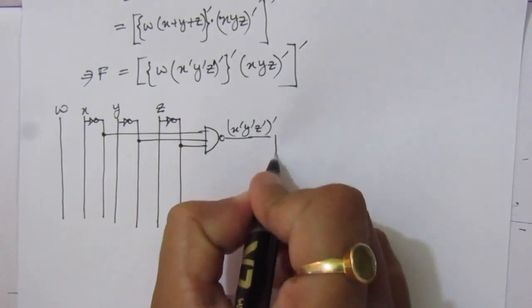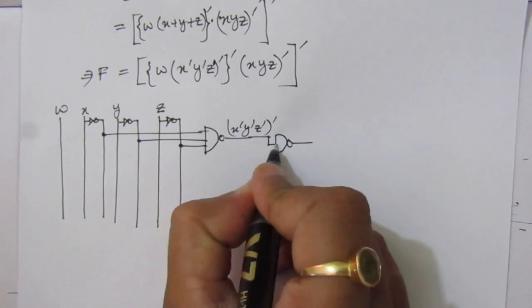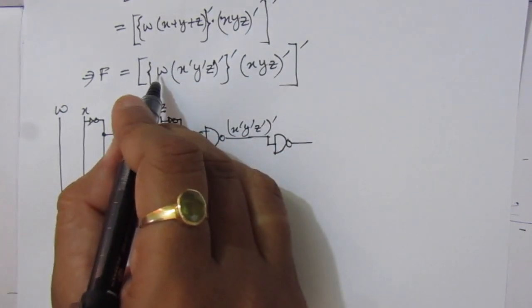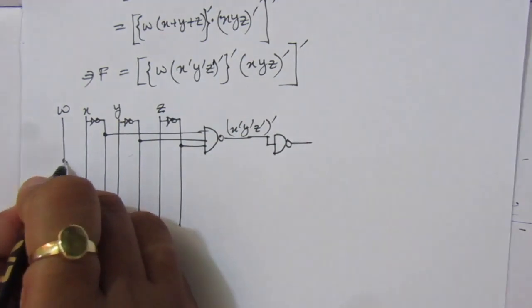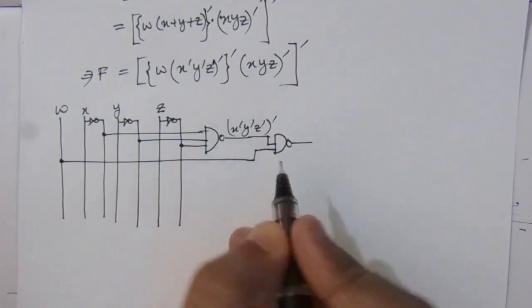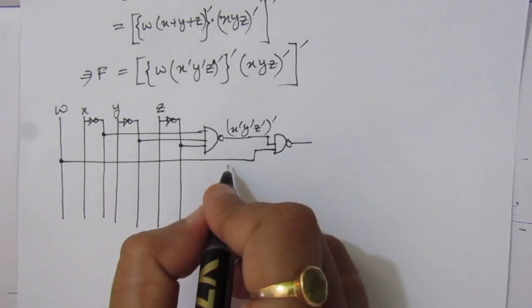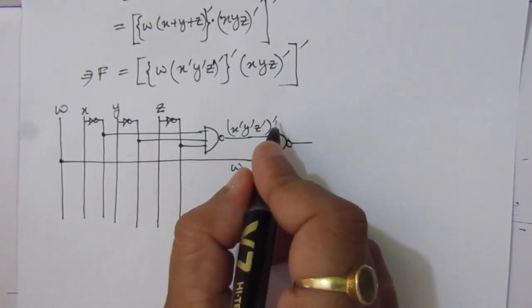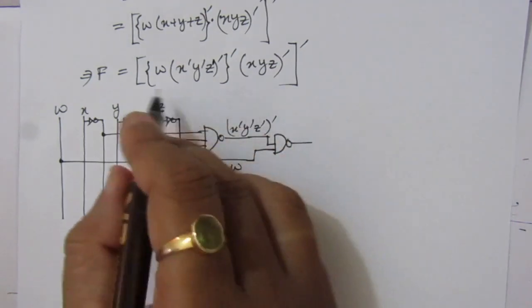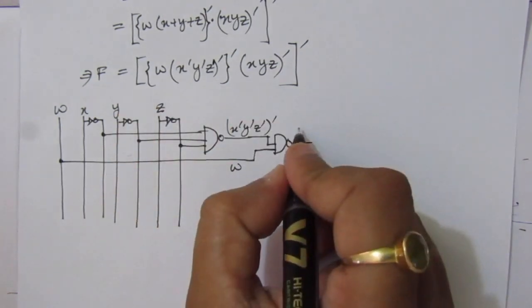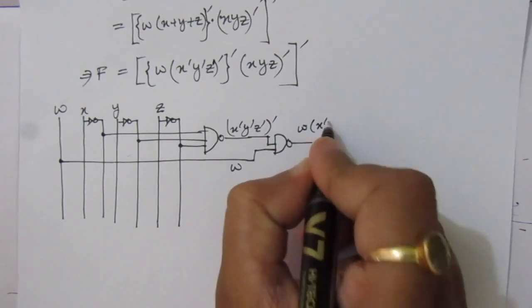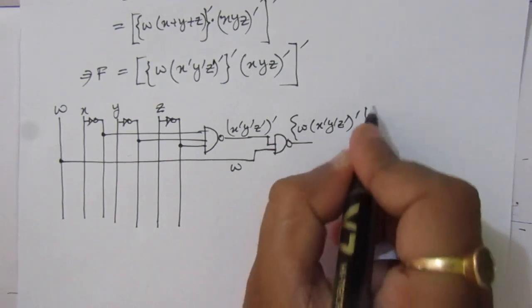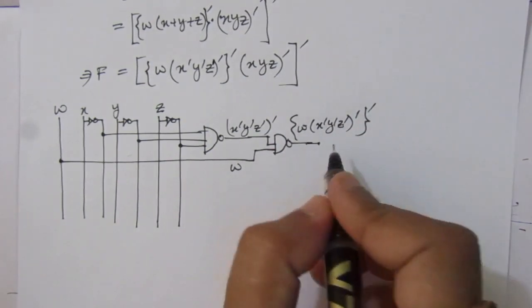So we use another NAND gate. One input will be the output of the previous NAND gate — that is (x̄ · ȳ · z̄) whole bar — and the other input is W. So we get W · (x̄ · ȳ · z̄ whole bar) whole bar from this NAND gate, which corresponds to this term in our expression.